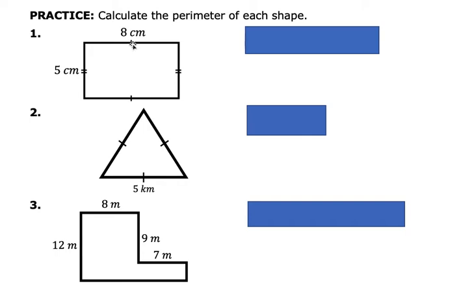So for this right here, we have these markings which indicate which sides are of equal length. So this is a rectangle, and this is 8 and 8, and this is another pair of 5 and 5. So tracing each edge, 8 plus 5 plus 8 plus 5, which is 26 centimeters.